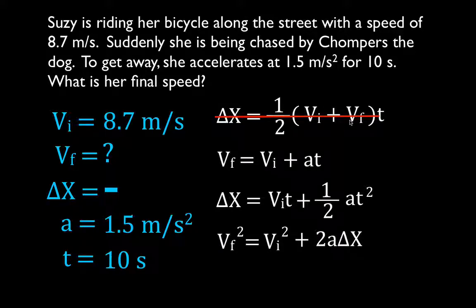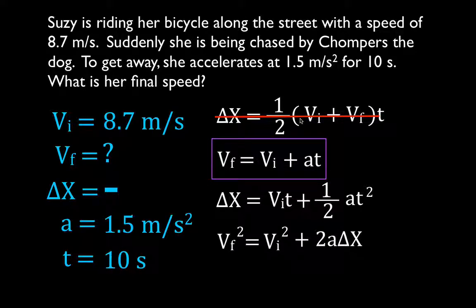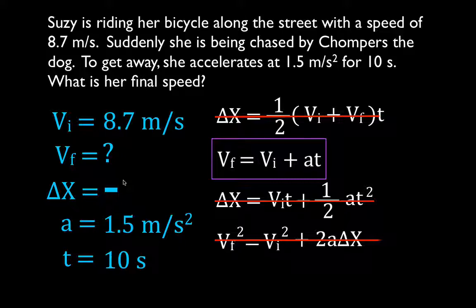Checking the second equation: it has the final velocity - it's actually already solved for the final velocity. Do we know the initial velocity? Yes. The acceleration? Yes. The time? Yes. Therefore, we can use this equation. Checking the remaining equations: the third equation doesn't have final velocity, so we can't use it. The fourth equation has final velocity but also has delta x, which we don't know, so we can't use that one either.